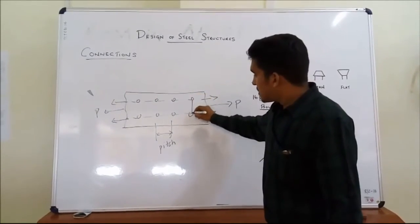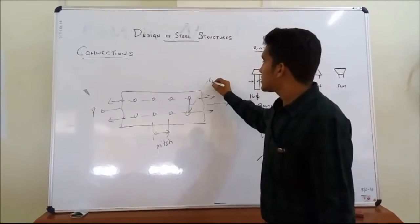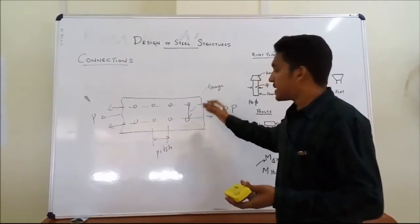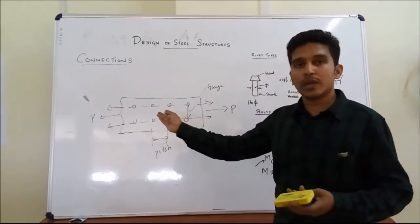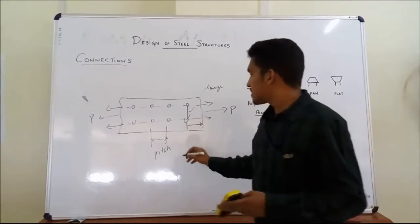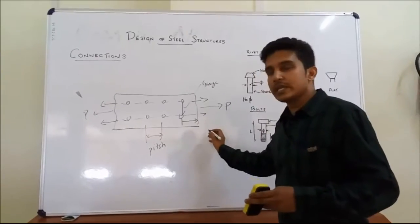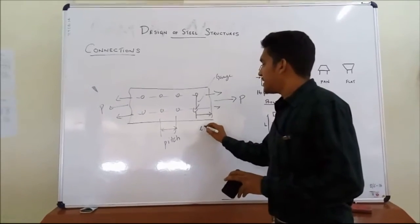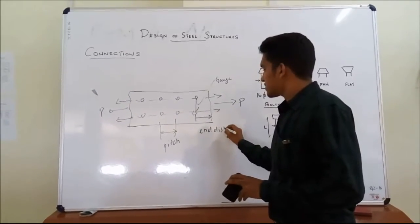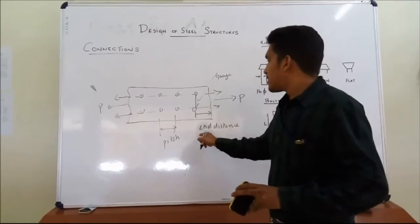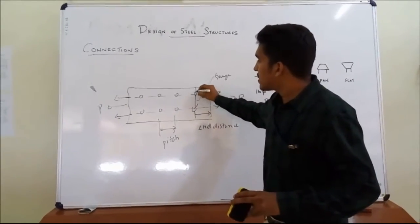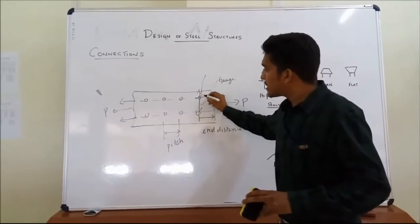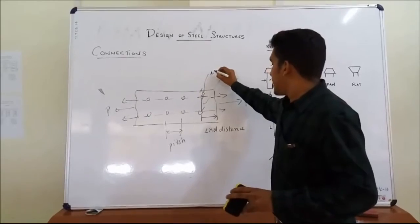Similarly, if you take like this, this is called as gauge. It is the center to center distance between two holes or rivets taken normal to the direction of loading. And similarly, this distance is known as, taken horizontally from the end bolt or rivet to the edge, is known as end distance. And also similarly, taken normal on the upper side from the center of the bolt to the upper end is known as edge distance.